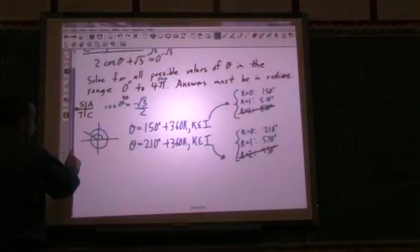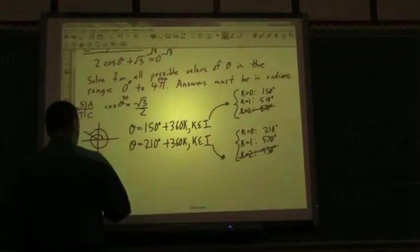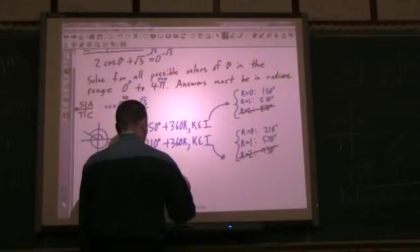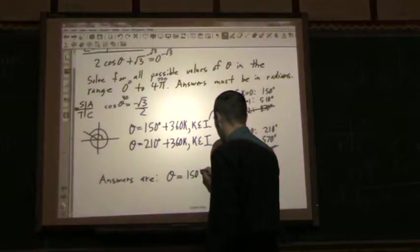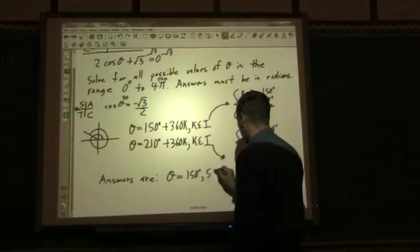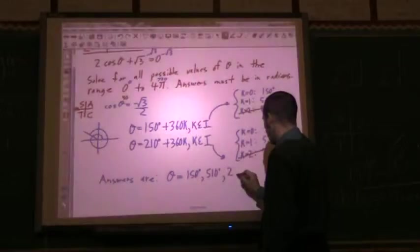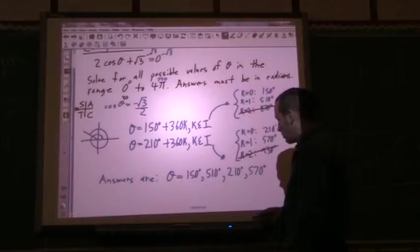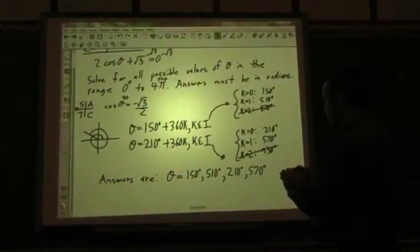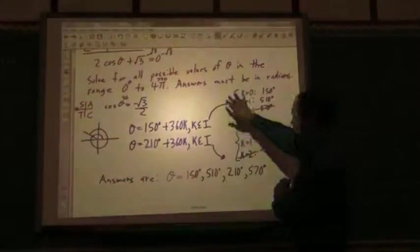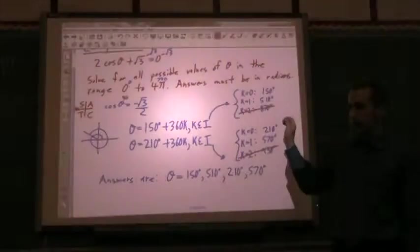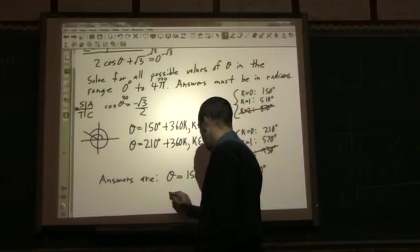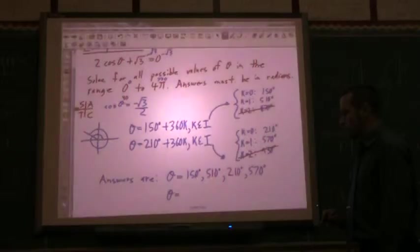So now I'm going to list all my answers. So the answers are, theta can equal 150, 510, 210, and 570. So there are all your answers. Now a lot of people would stop there and they're almost correct, except for it says that the answers must be in radians. So I'm going to have to take my answers that are in degrees right now and convert them into radians.